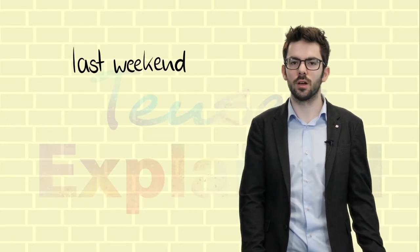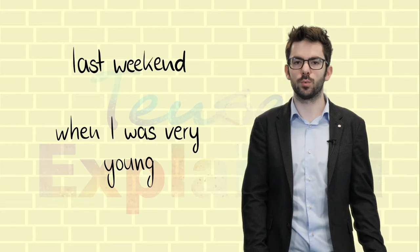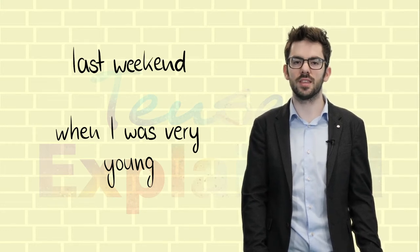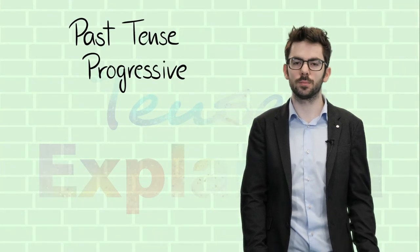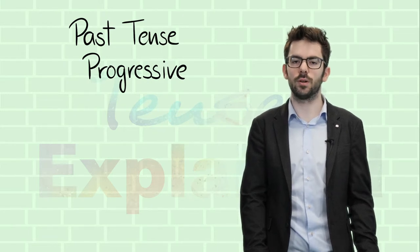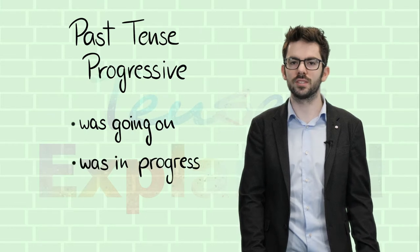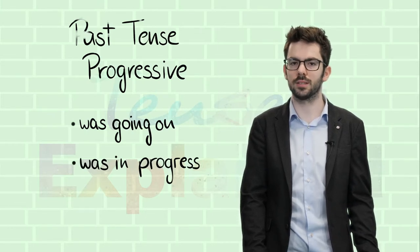As you can see, time expressions such as last weekend or even when I was very young can help us find out that we should use the past tense because they indicate past time. But there is also a second form, the past tense progressive. It has some similarities to the present progressive and is used to talk about something that was going on or was in progress at a particular point in the past.